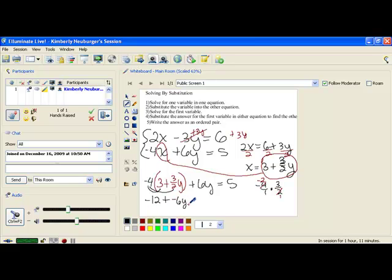And then, copying the rest of the equation down, we have this. Now, let's combine our like terms. We have a negative 6y and a positive 6y that cancel each other.